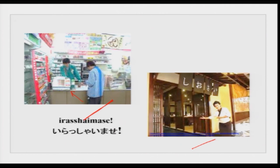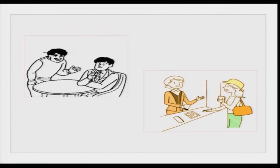Irasshaimase — this is how it is written; there is a small su over here on the line which shows that it is a double sound: shai-mase. Now we were talking about this restaurant kaiba.